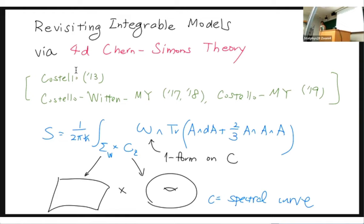Today I'm going to discuss a new approach to integrable models — a four-dimensional version of the Chern-Simons theory. It's a quantum field theory defined on the product manifold: a two-dimensional sigma manifold times a complex curve C. On the sigma side we get integrable models, and on the C side the complex curve plays the role of the spectral curve. The four-dimensional theory is defined by the Chern-Simons three-form together with a one-form on this spectral curve C.